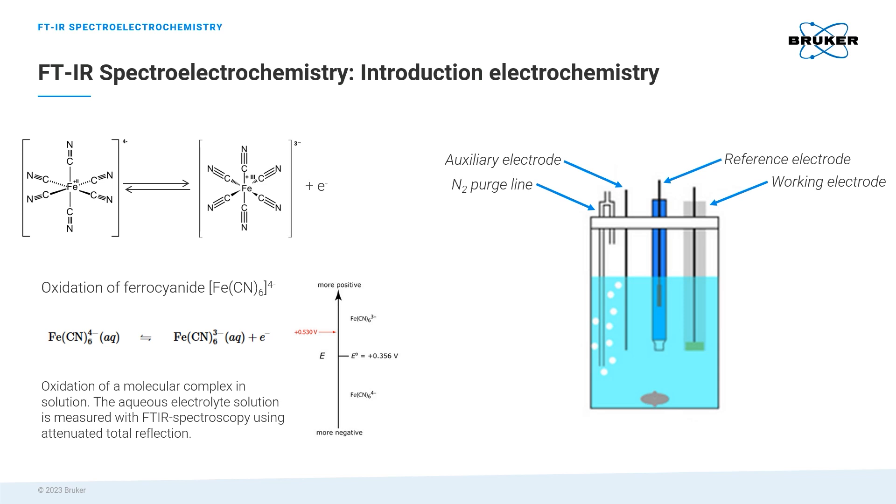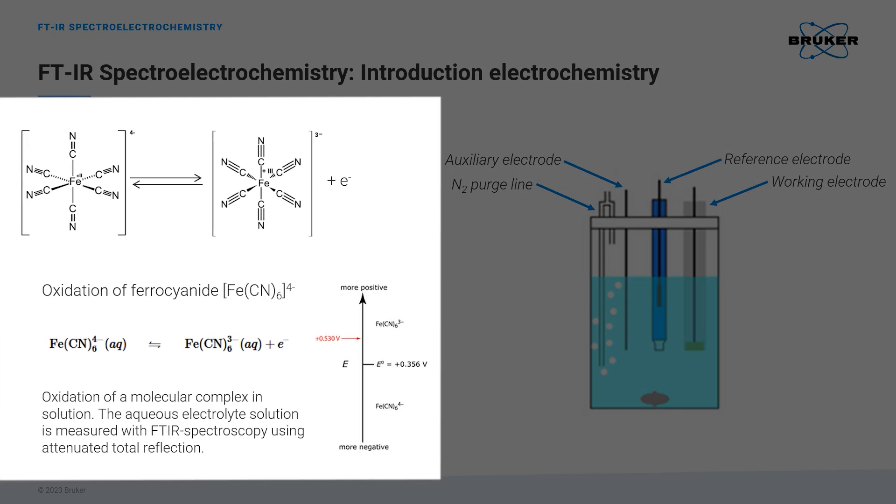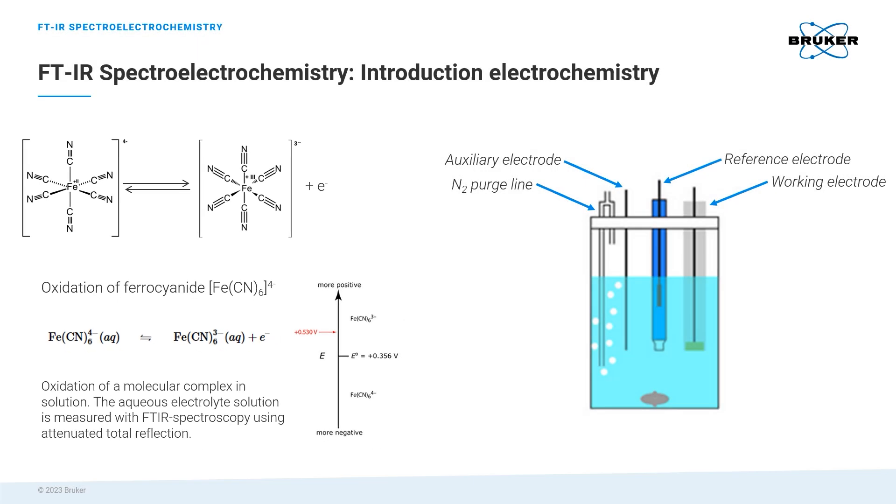To showcase the experiment, we have chosen a simple example to focus on the steps required for this setup: the oxidation of ferrocyanide. The electric potential in our measurement cell is increased until we reach the binding energy of the electron, causing oxidation of the ion center. This affects the binding strength of the cyanide ligand, which can be easily observed in the FTIR spectra.